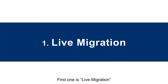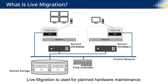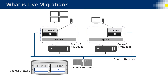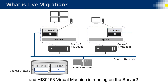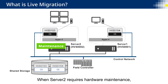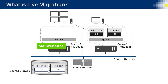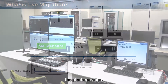The first one is live migration. Live migration is used for planned hardware maintenance. It moves running virtual machines to another virtualization server without stopping operation and monitoring. In this demonstration, HIS0154 Virtual Machine is running on Server 1 and HIS0153 Virtual Machine is running on Server 2. When Server 2 requires hardware maintenance, HIS0153 can be moved to Server 1 by live migration. Live migration will take only a few seconds, and plant operators may not notice it. With live migration, hardware maintenance can be done without affecting the plant operation.